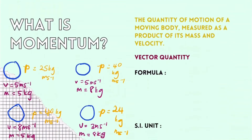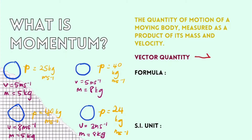First off, what is momentum? Momentum can be defined as the quantity of motion of a moving body, measured as a product of its mass and velocity. Momentum is a vector quantity and it has the same direction as the object's velocity. The formula for momentum is p = mv, and this symbol here is the symbol for momentum.